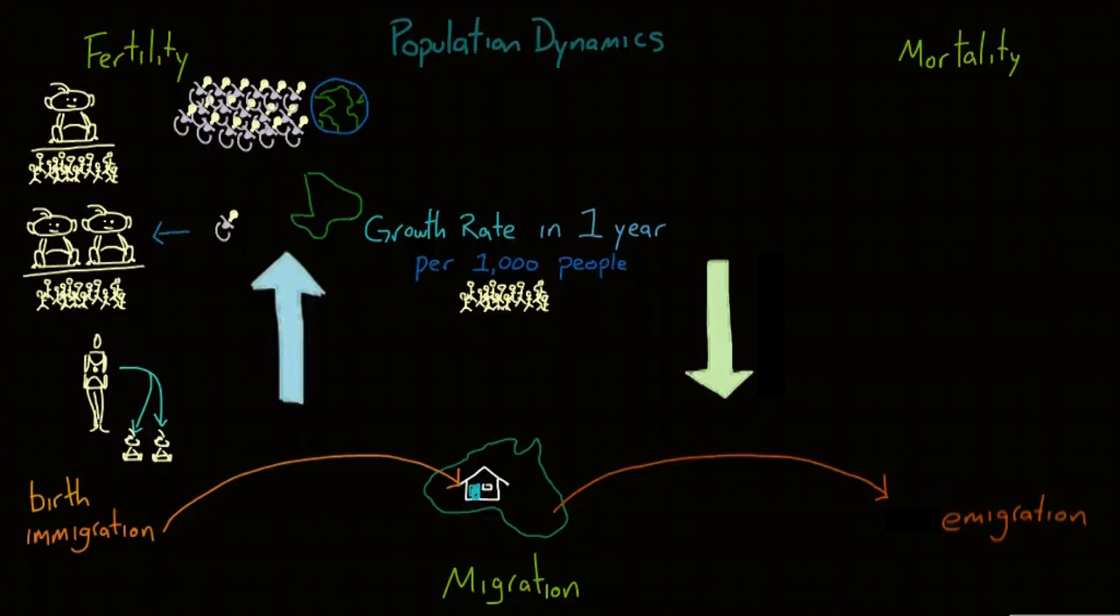A total fertility rate of exactly 2 neither adds nor subtracts from the population. This is because the woman is giving birth to the number of people that created the children. This rate only looks at the number of children a woman will bear. So the two children exactly replace their biological parents. And finally, a fertility rate of less than 2 will decrease the population.